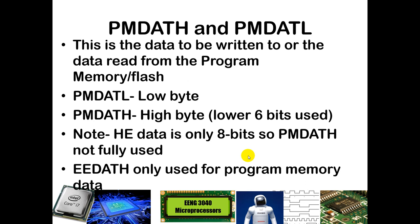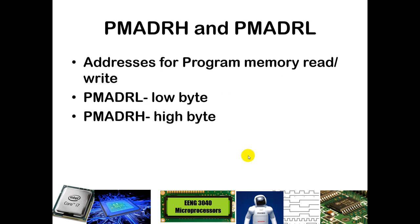PMDATH and PMDATL are the data registers — that is the data you are going to write to flash memory, or where read-back data comes in. The low byte is in PMDATL and the high byte is in PMDATH. We will only be using the lower 6 bits in PMDATH because we are talking about 14-bit reads and writes for program memory. For the high endurance registers we are only using 8 bits, so PMDATH is not fully used. For addresses, the low byte is in PMADRL and the high byte is in PMADRH — together they form a 16-bit address.